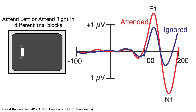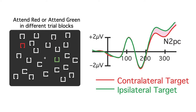The P1 and N1 are larger for attended location stimuli than for ignored location stimuli. However, these effects are typically observed only for spatial attention, and only when attention has shifted prior to stimulus onset. Other kinds of attention don't usually have an impact until later components. For example, we see a component called N2PC if attention shifts to a location after stimulus onset.